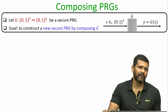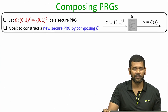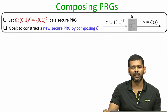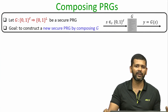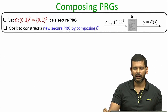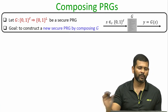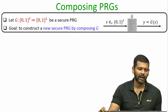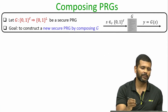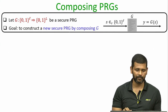Composing PRGs is a very popular operation. By composing PRGs we want to increase the input size and output size of a PRG. Imagine you are given a secure PRG - algorithm G that takes an input of size little l bits and produces an output of size big L bits.